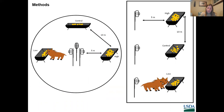Each study began by pre-baiting sites for five nights to locate wild pigs. We selected sites with fresh sign of wild pigs, including wallows, rooting, tracks, and feces. A total of 20 sites in Alabama and 30 sites in Texas were pre-baited with approximately 11 kilograms of corn to locate wild pigs, until eight sites with independent sounders of wild pigs were identified in each study area. In Alabama there was approximately 0.7 miles between sites, while in Texas there was approximately 1.6 miles between sites.